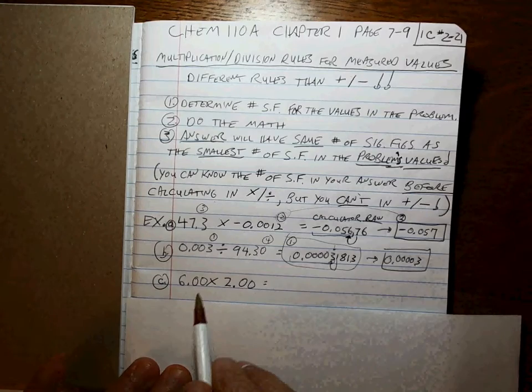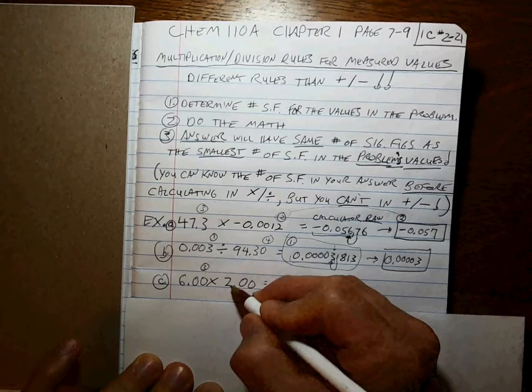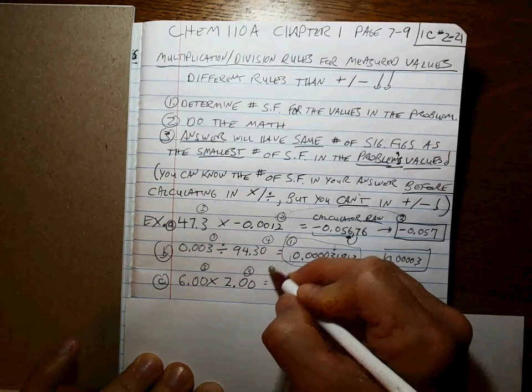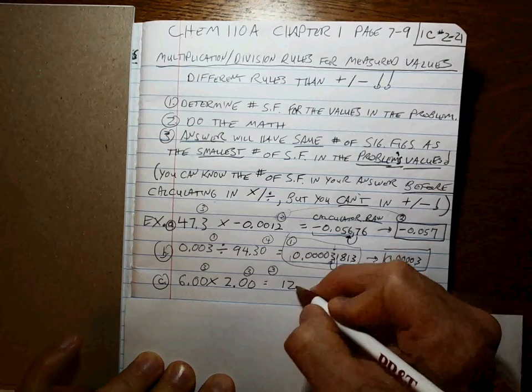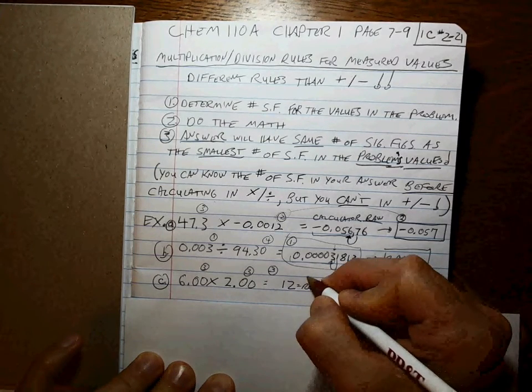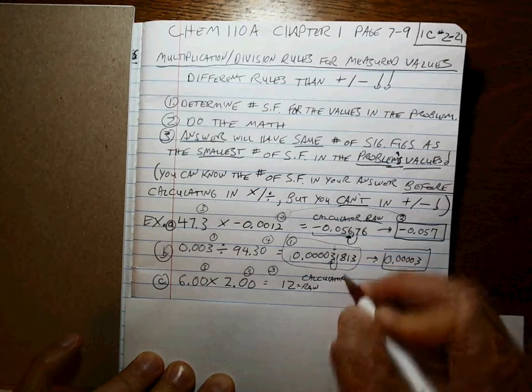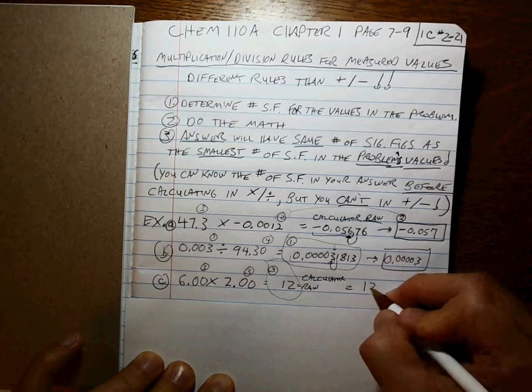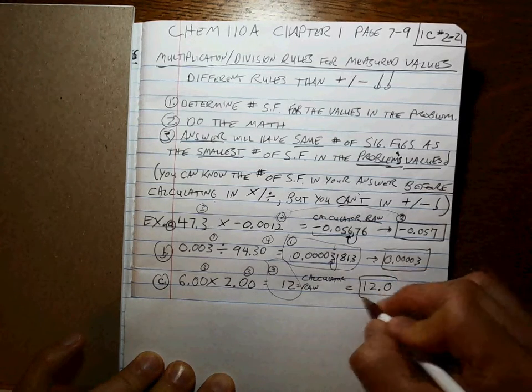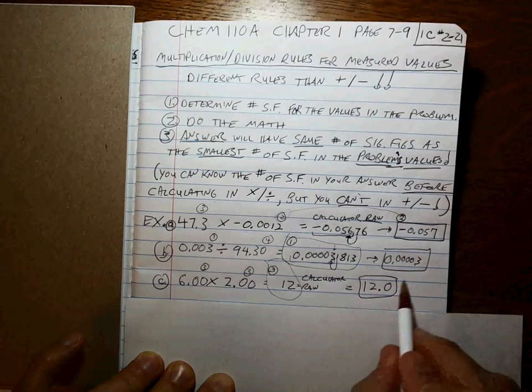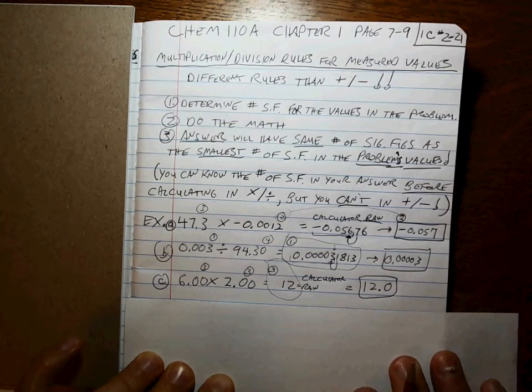How many sig figs in this answer? I already know: 1, 2, 3; 1, 2, 3. So the answer has 3. If you punch that into your calculator, that's what you're going to get. That's the raw calculator answer. Since that number has to be 3 sig figs, what do you have to write? 12.0. Sometimes you have to chop off numbers that aren't significant. Sometimes you have to add numbers that are significant. Alright?